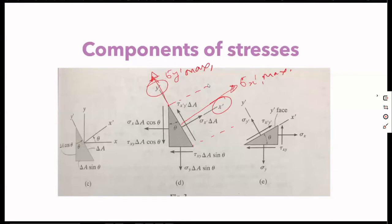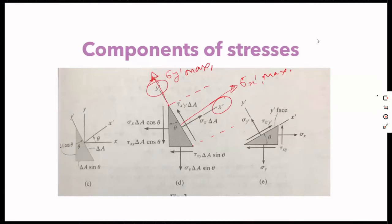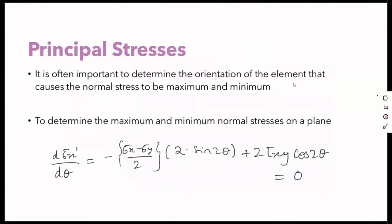We get sigma x maximum, sigma y maximum, and similarly minimum values — sigma x minimum and sigma y minimum. When we have this angle theta generating infinite planes, we have to find that specific plane. It is important to find that plane because failure will occur at maximum stresses, so the orientation of the plane is important.